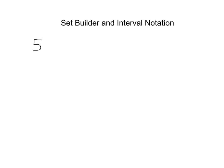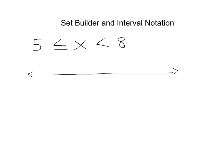We're going to have something like 5 is less than or equal to x is less than 8. If we look at this on the number line, we have 5 and then to the right of that we have 8. What we're describing here are all the numbers between 5 and 8, everything between 5 and 8. The equals sign on the 5 means we include the 5.